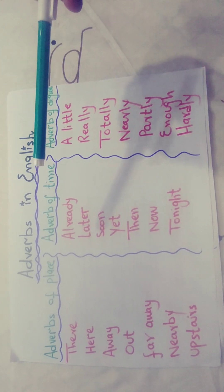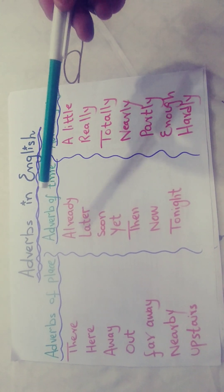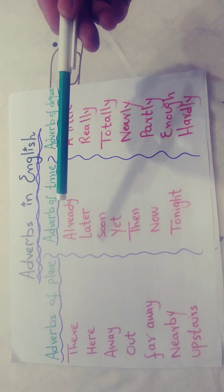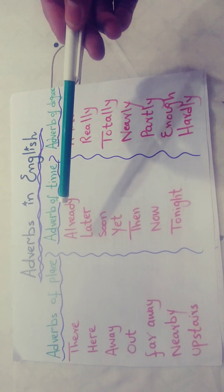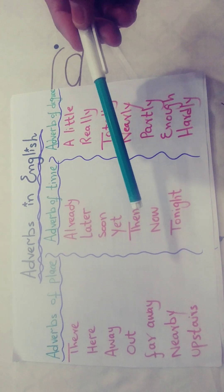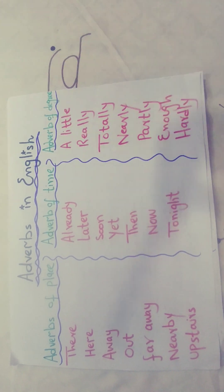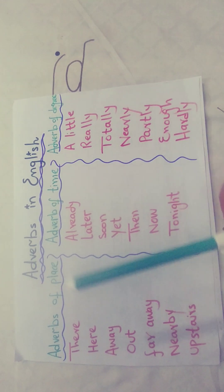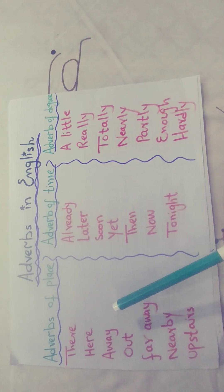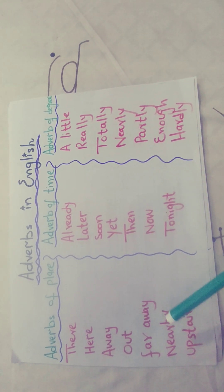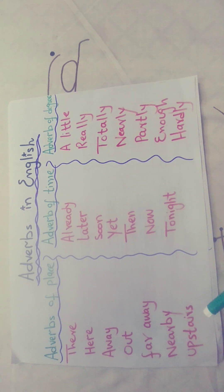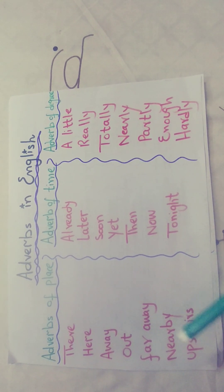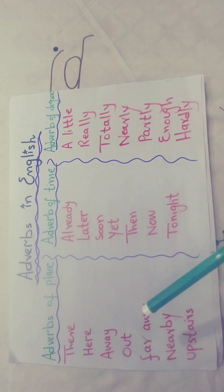Today I will define the types of adverbs. The very first one is the adverb of place. These words refer to place — for example: there, here, away, out, far away, nearby, upstairs, or downstairs. These are the adverbs of place.